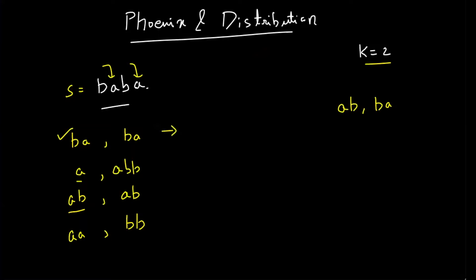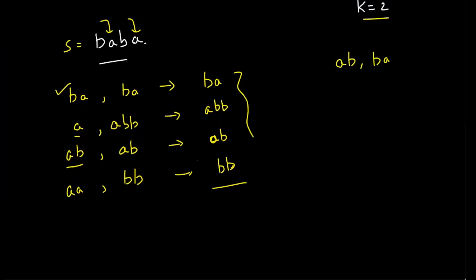So if you take BA and BA, who's the lexicographically largest? Lexicographic means dictionary order. BA and BA — obviously BA. Who's the larger of A and ABB? ABB appears last in the dictionary, so ABB. Of AB and AB, who's the largest? ABB. So among them, you figure out who is the lexicographically smallest — the one which appears first in the dictionary. AB will always occur first, so you print AB.